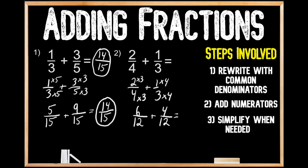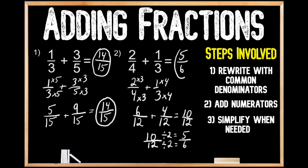Now we move to the next step: add the numerators. The denominator doesn't change — it's still 12 — and six plus four gives us 10. Moving to step three, simplify when needed: we write 10 over 12, and since both 10 and 12 are multiples of two, we divide both by 2. Twelve divided by 2 is 6, and 10 divided by 2 is 5, giving us 5 sixths. So two fourths plus one third equals 5 sixths in its lowest terms.